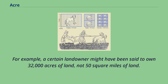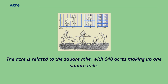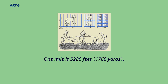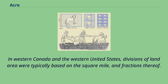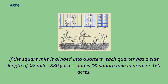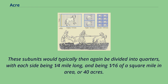The acre is related to the square mile, with 640 acres making up one square mile. One mile is 5,280 feet. In western Canada and the western United States, divisions of land area were typically based on the square mile and fractions thereof. If the square mile is divided into quarters, each quarter has a side length of half a mile and is one quarter of a square mile in area, or 160 acres. These subunits would typically then again be divided into quarters, with each side being one quarter mile long and being one sixteenth of a square mile in area, or 40 acres.